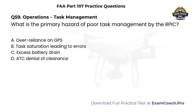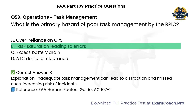Operations — Task Management. What is the primary hazard of poor task management by the remote PIC? A. Over-reliance on GPS. B. Task saturation leading to errors. C. Excess battery drain. D. ATC denial of clearance. Correct answer: B. Task saturation leading to errors. Inadequate task management can lead to distraction and missed cues, increasing risk of incidents.